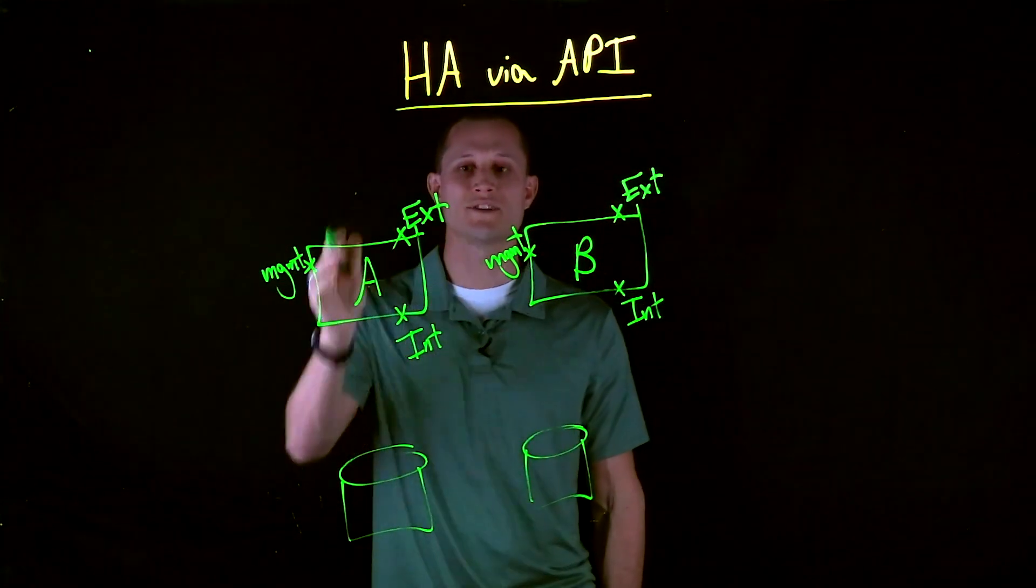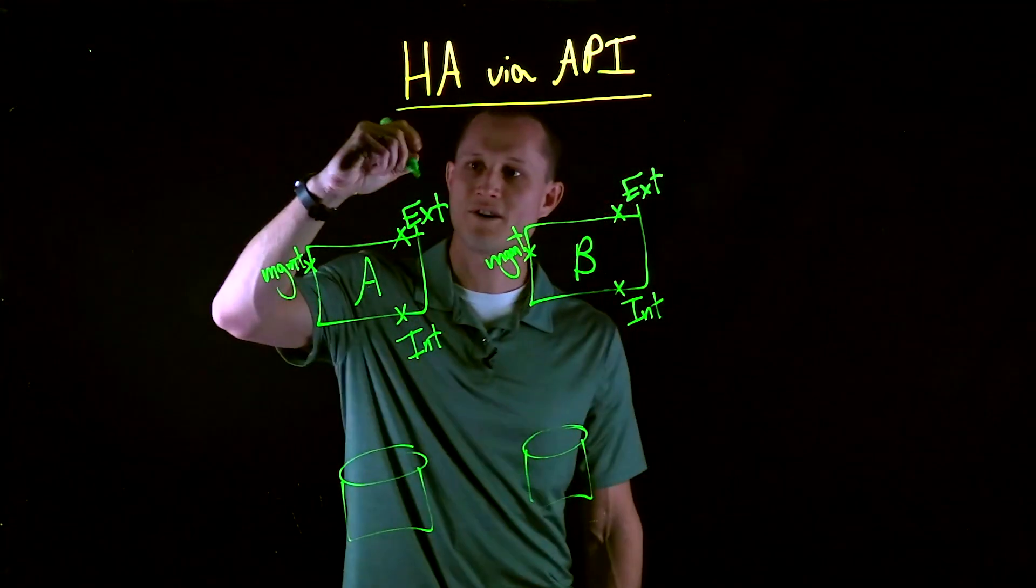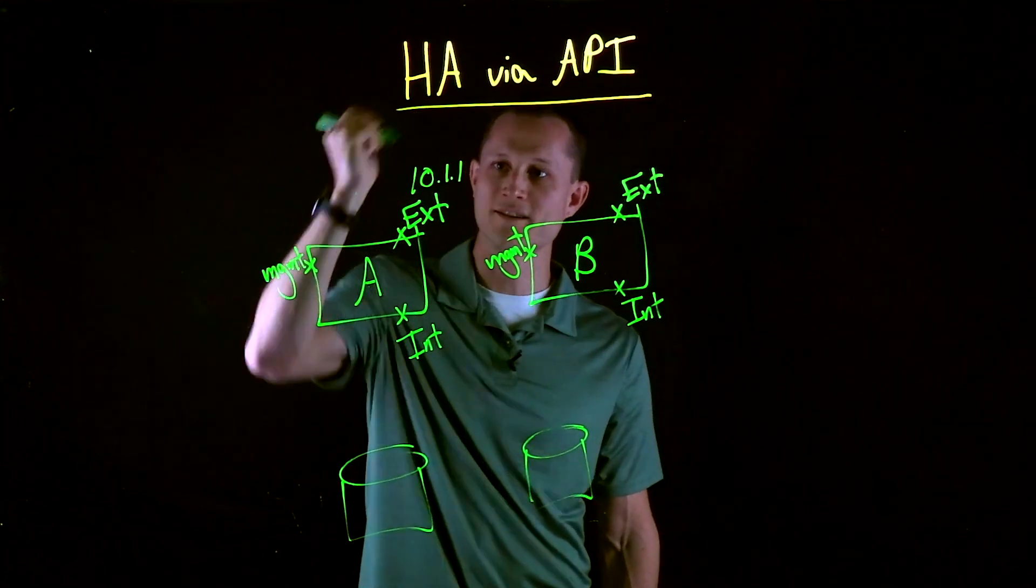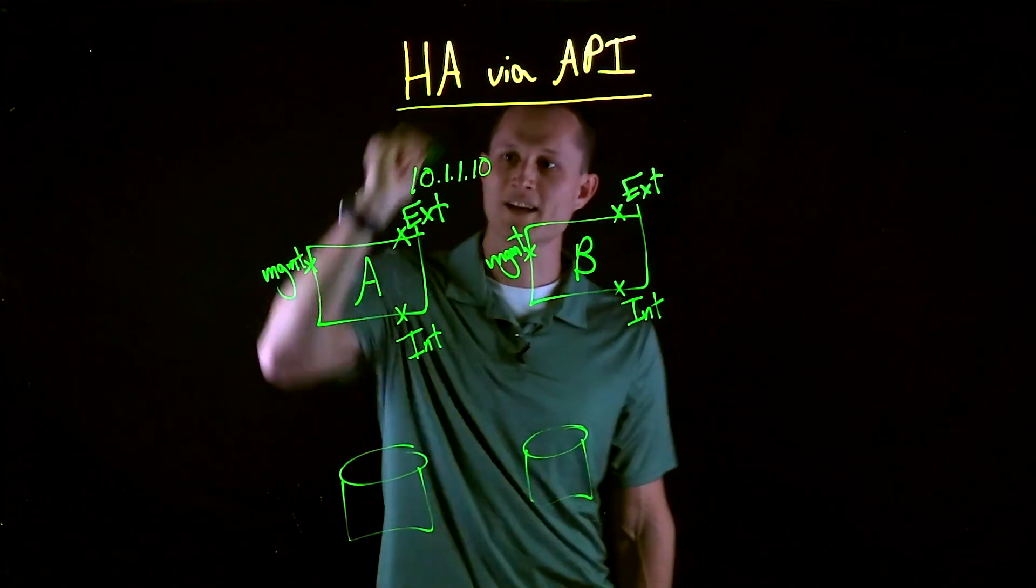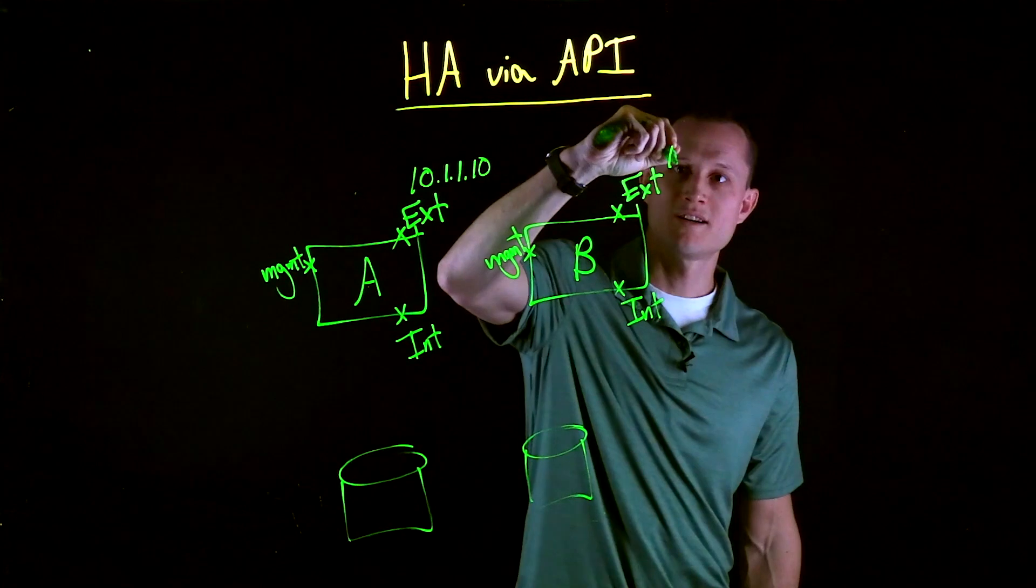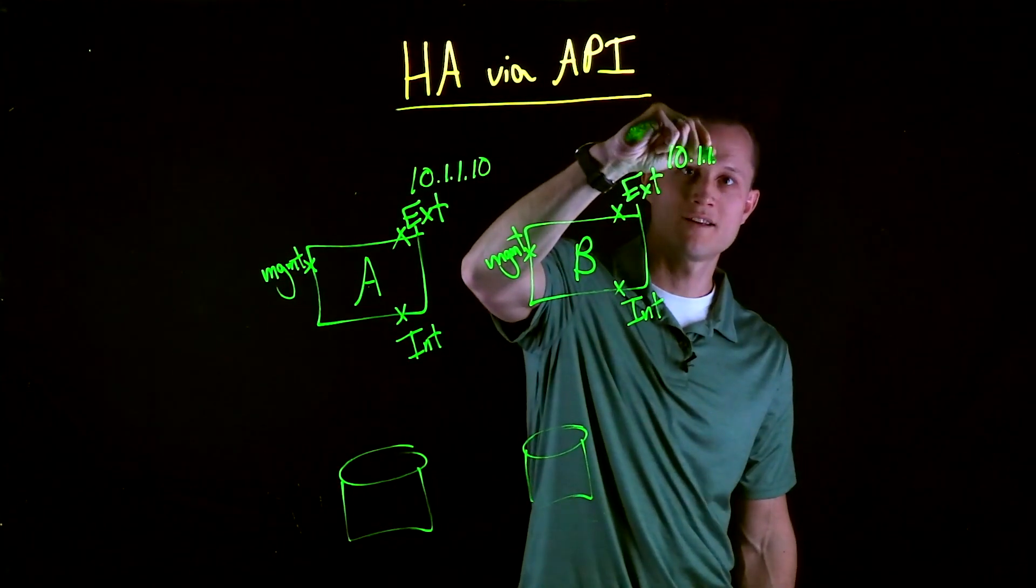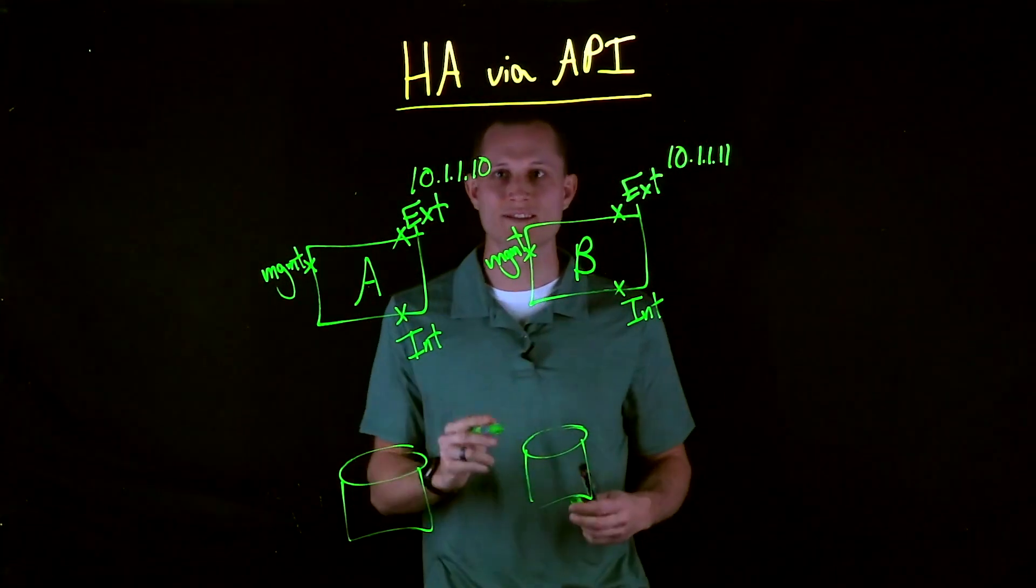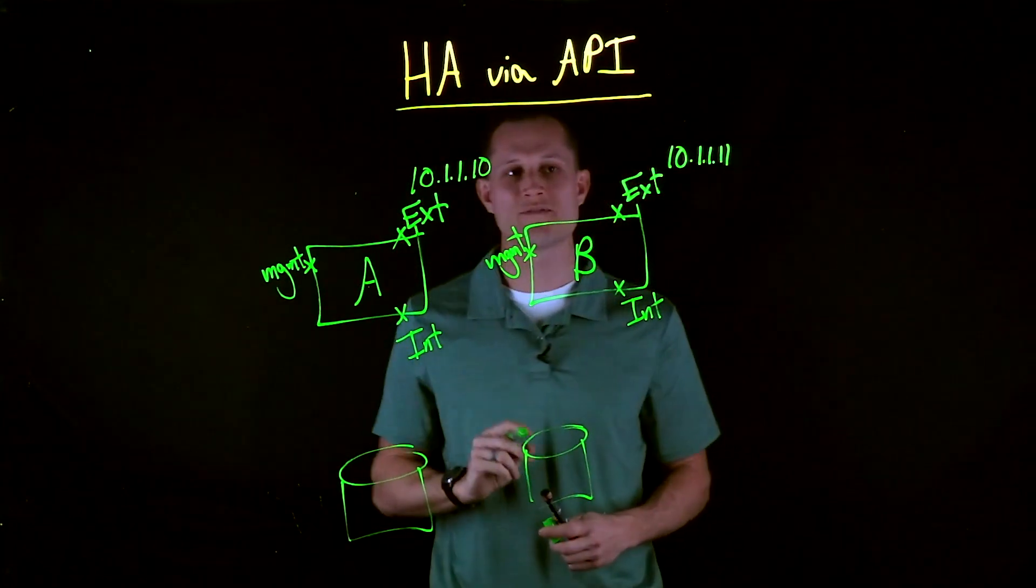From here, we still need IP configs. So let's call this outside subnet 10.1.1, and we'll give the active unit .10. We'll give the standby unit .11. Now we have two front-end IPs. These are both associated with the Azure VM NIC.